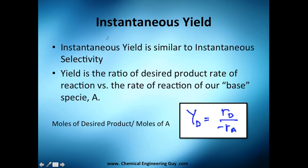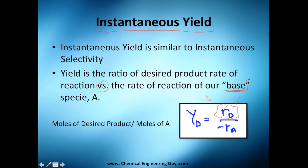It's better to analyze instantaneous yield first. Instantaneous yield is essentially the ratio of the desired product rate of reaction versus the rate of reaction of our base species. I say base because we always try to use the limiting reactant — for example, if all data is based on species A, we use the rate of reaction of species A. The key difference is that the numerator is a rate of production and the denominator is a rate of reaction.